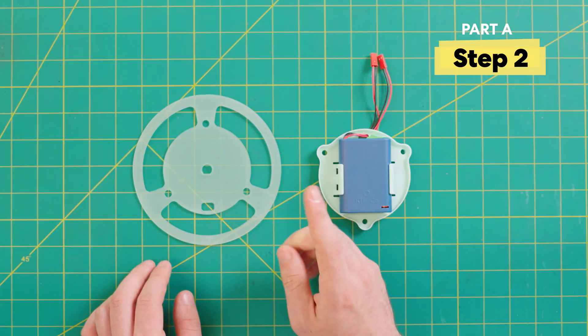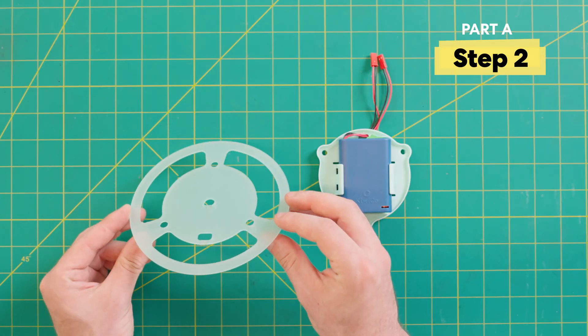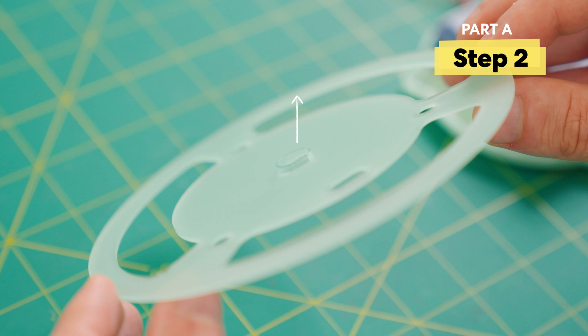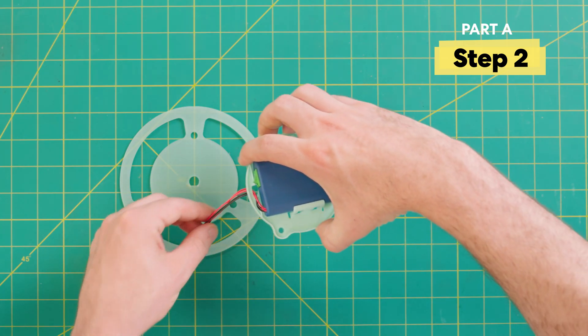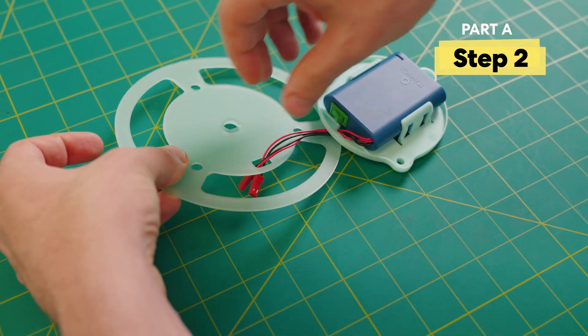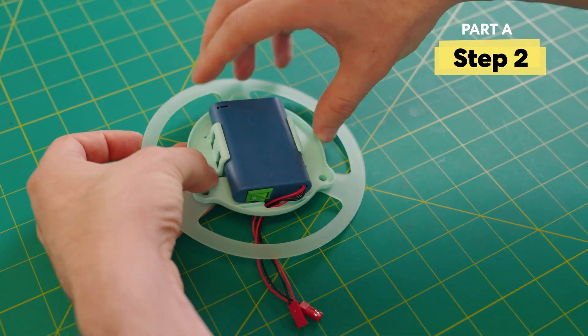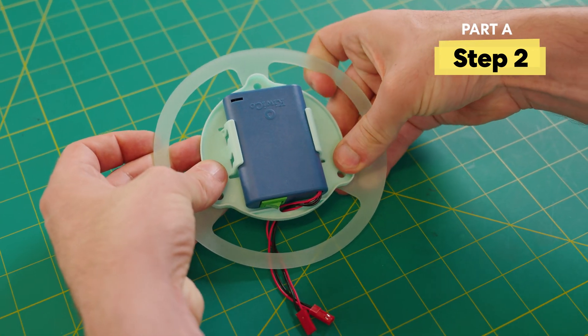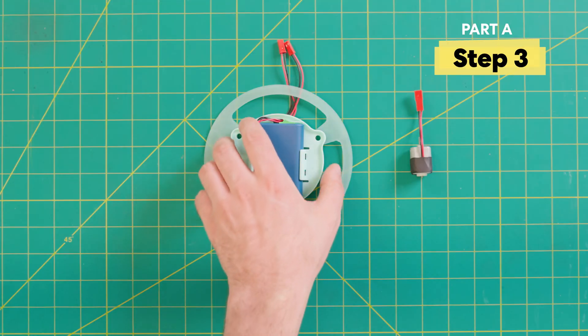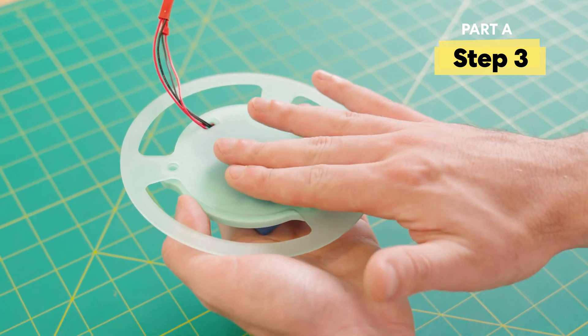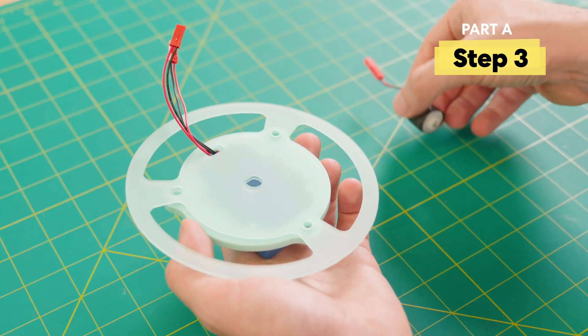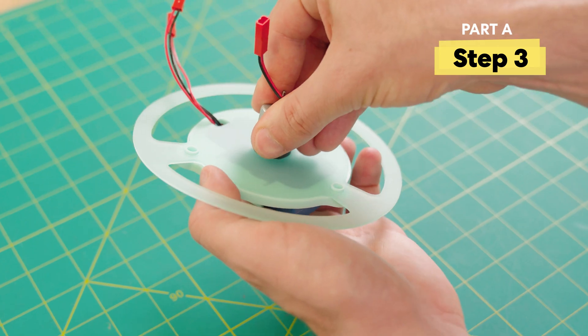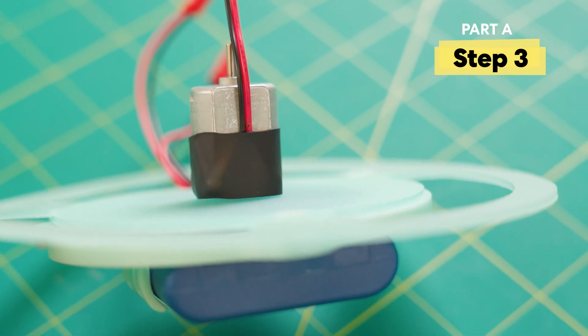Next, we're going to take this center ring here, and we're going to make sure that this lip is facing up. Feed these wires through this hole. I'm lining up these three holes and snapping them into place. We're going to flip this over and make sure that this side is flat, and we're now going to connect the motor. Just make sure to line up the semi-circle with the opening of the piece right here.